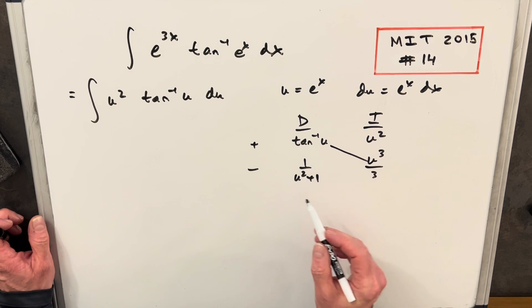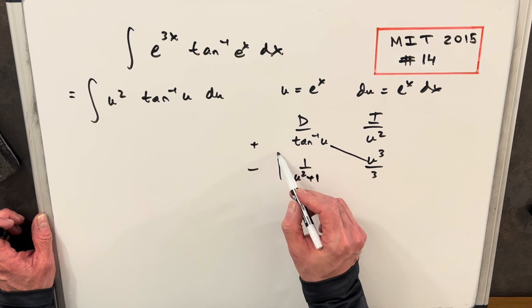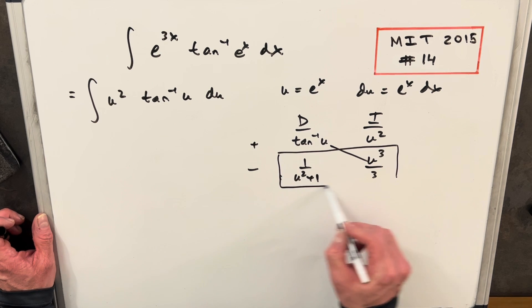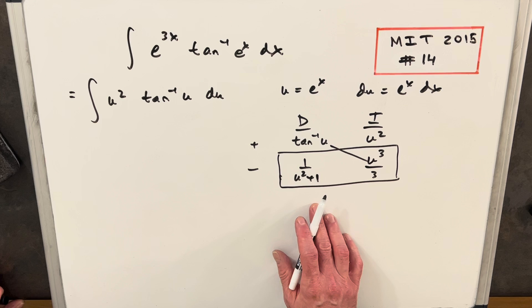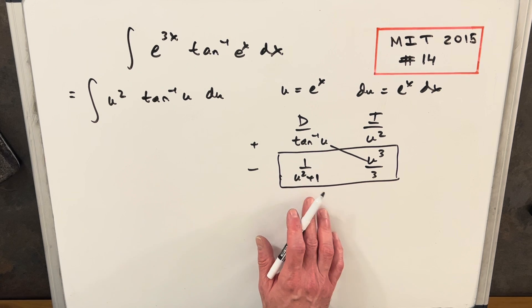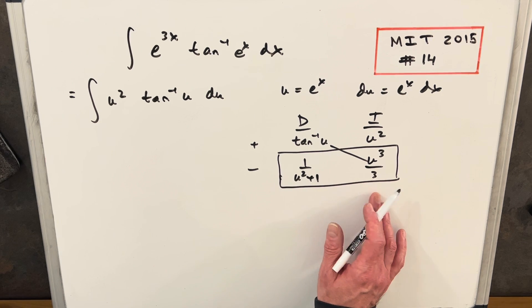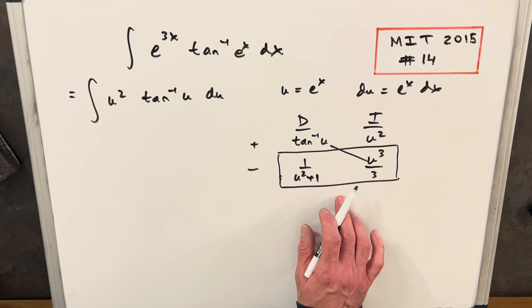So we have part of our answer right here, but then what we need to do is take this piece right here and we have to do another integral, because this is not—we could do this again, right? We could differentiate this, integrate this again, but it's not really getting any simpler, so I think our best bet is just to integrate this.